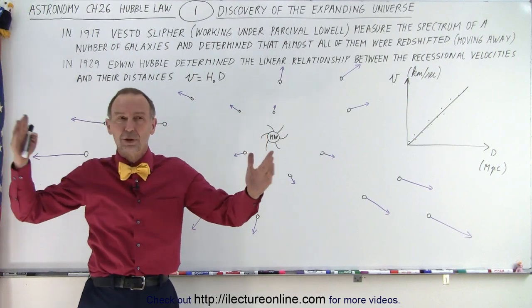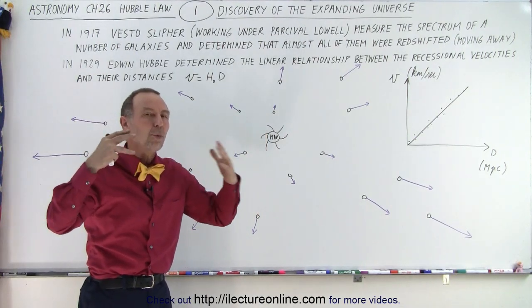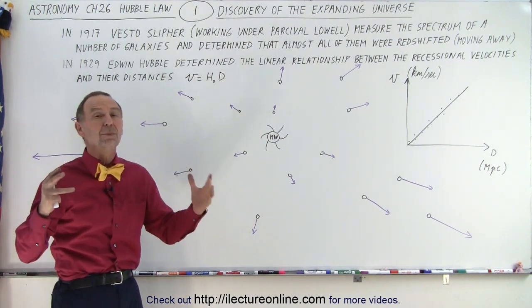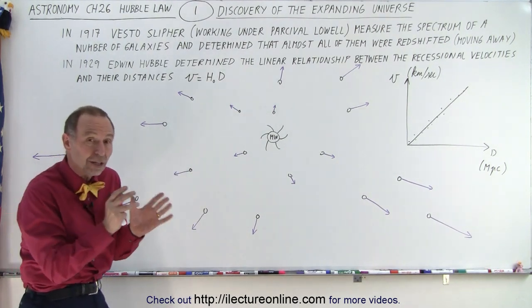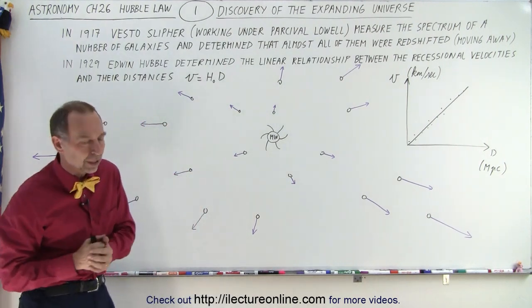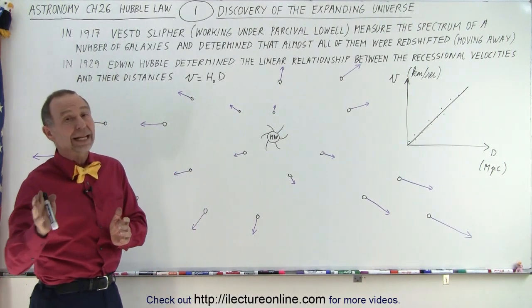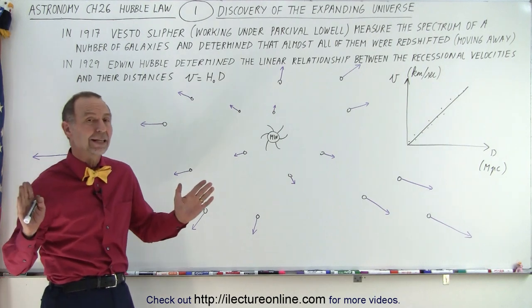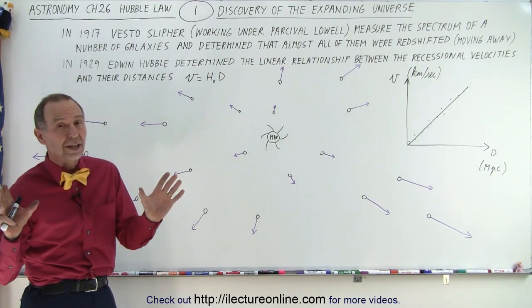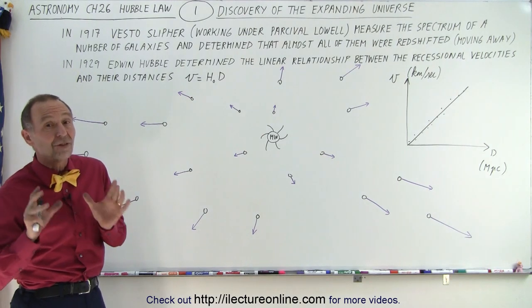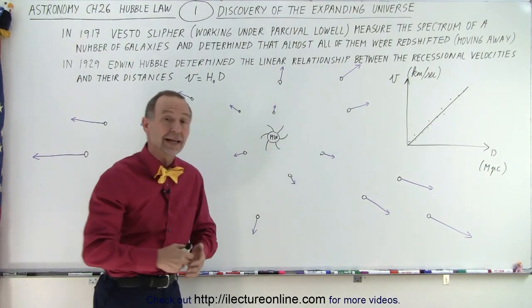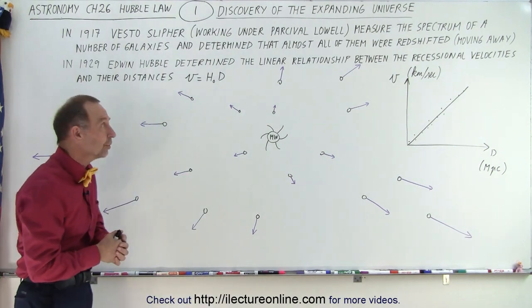So all around, in every direction we looked, galaxies were moving away from us. Of course, at the time, that was still prior to that big debate where people didn't realize if those things were galaxies or actually nebulas in our own Milky Way galaxy. But Hubble, in 1923, finally solved that debate and said those things out there that we thought were spiral nebulas are actually spiral galaxies, galaxies outside our own galaxy, island universes, as they call them.